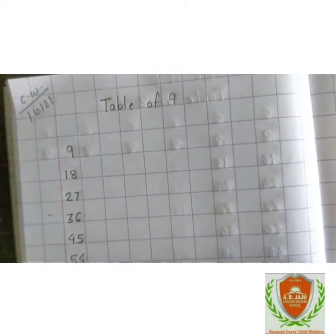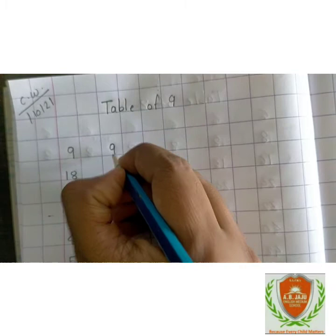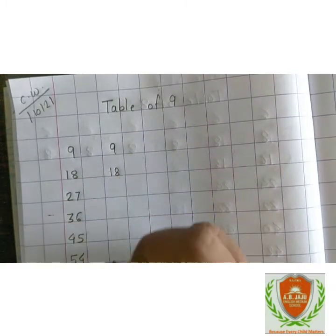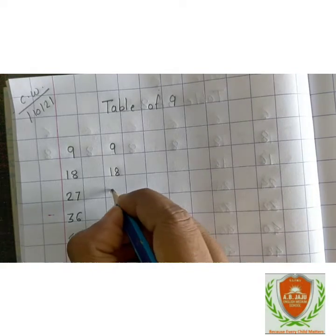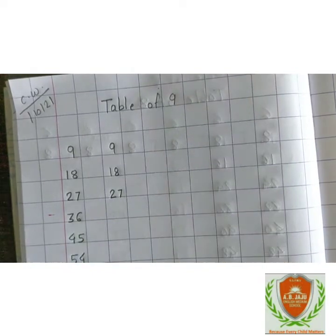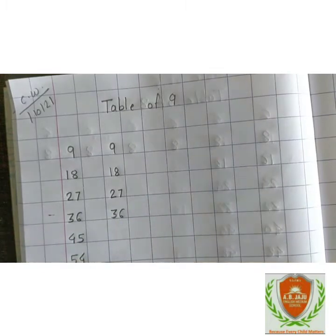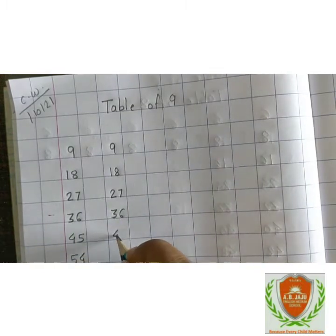Again repeat after me. 9 ones are 9, 9 twos are 18, 9 threes are 27, 9 fours are 36, 9 fives are 45.